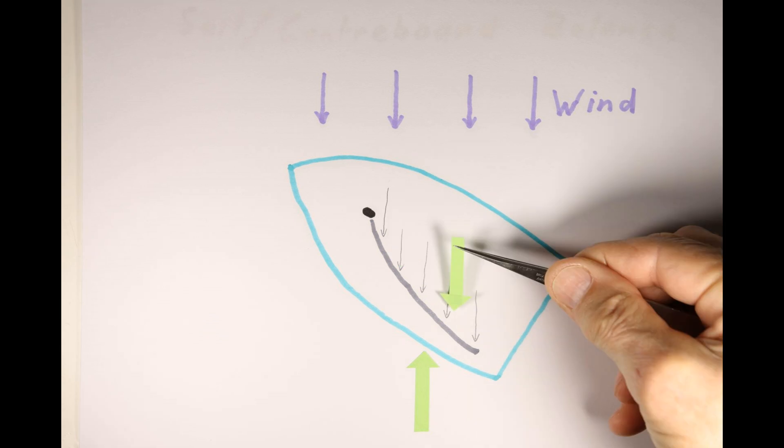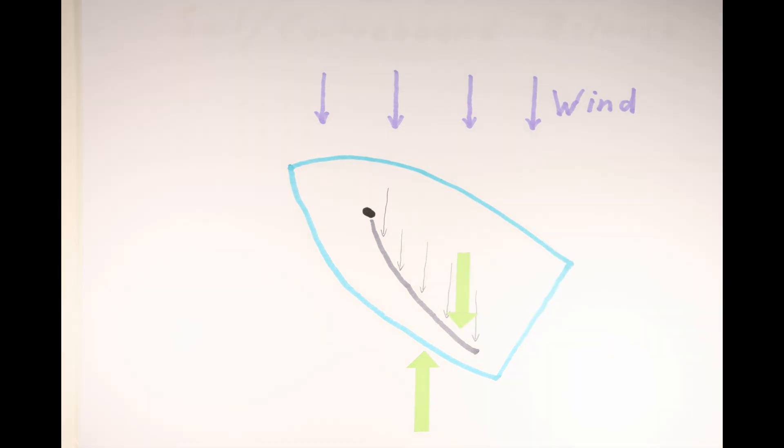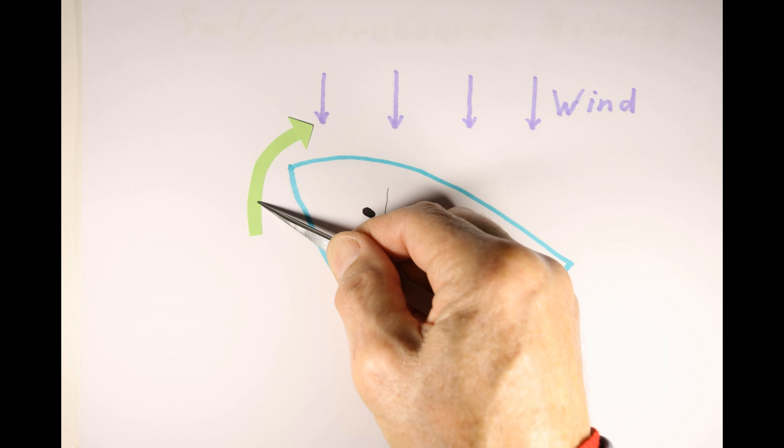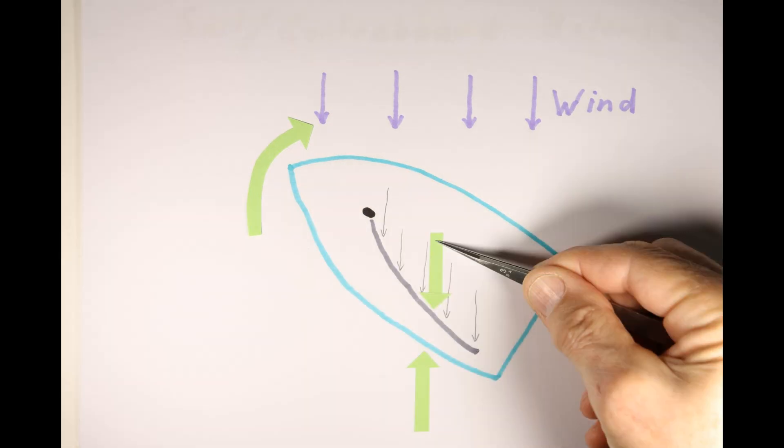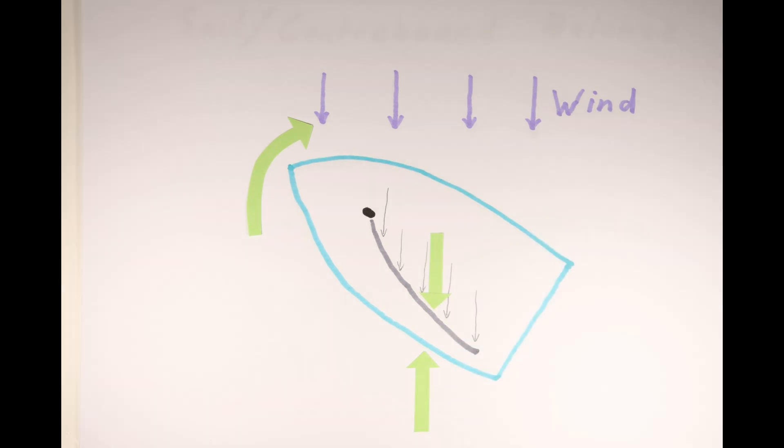Or the boat will turn up into the wind if the mast is sloping backwards as shown here. The ideal mast rake is for the force to cause the boat to head up slightly.